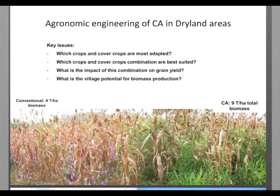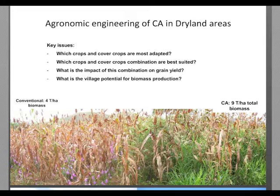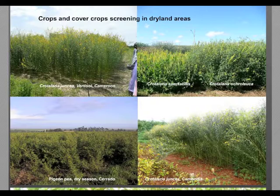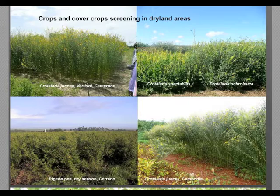Just to illustrate it, we have shown in these pictures: from 4 tons per hectare biomass with a single monocropping of sorghum, we have shifted to 9 tons per hectare of total biomass by associating brachiaria with the sorghum, with no effect on yield.